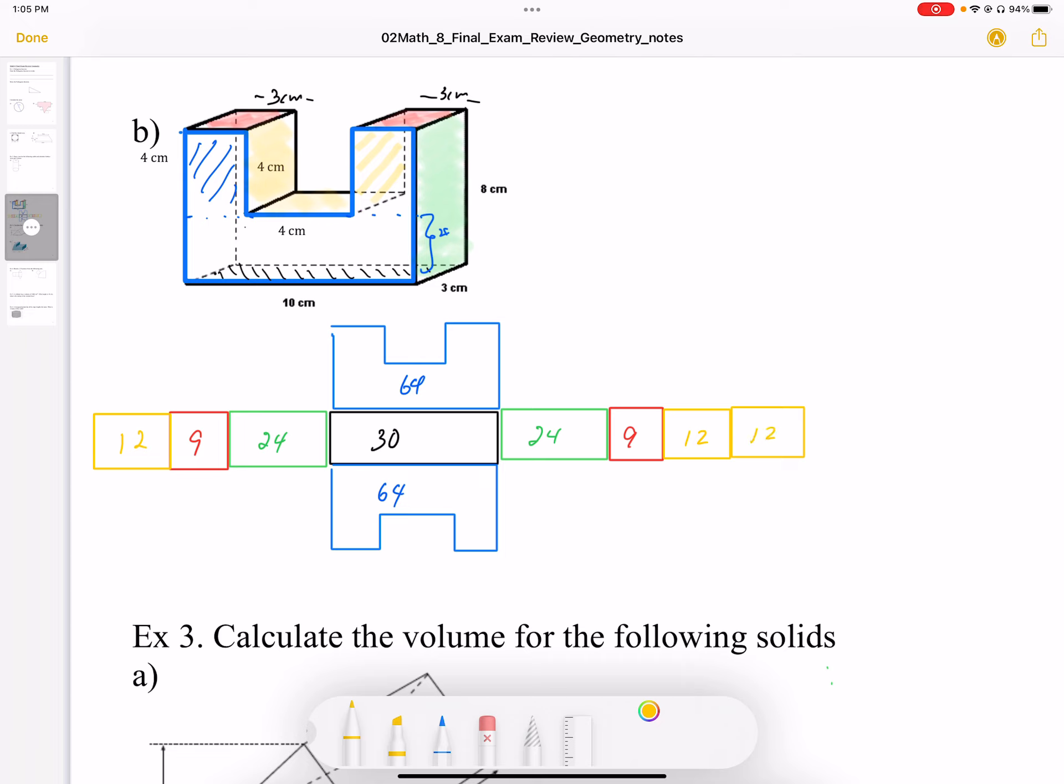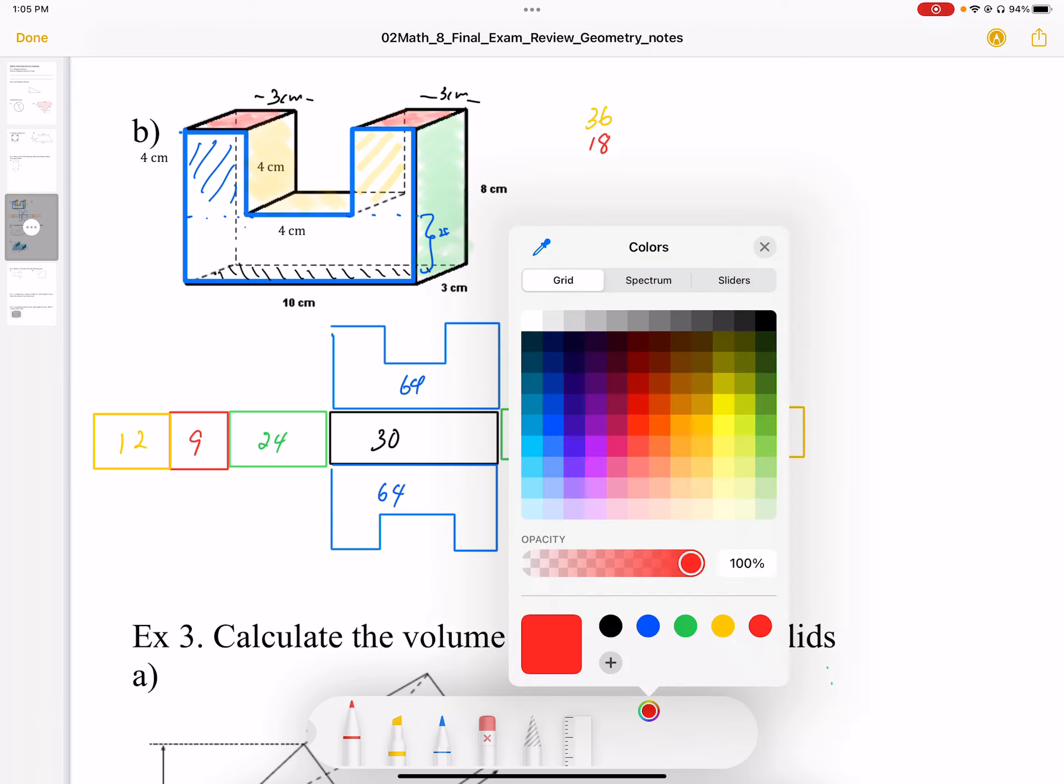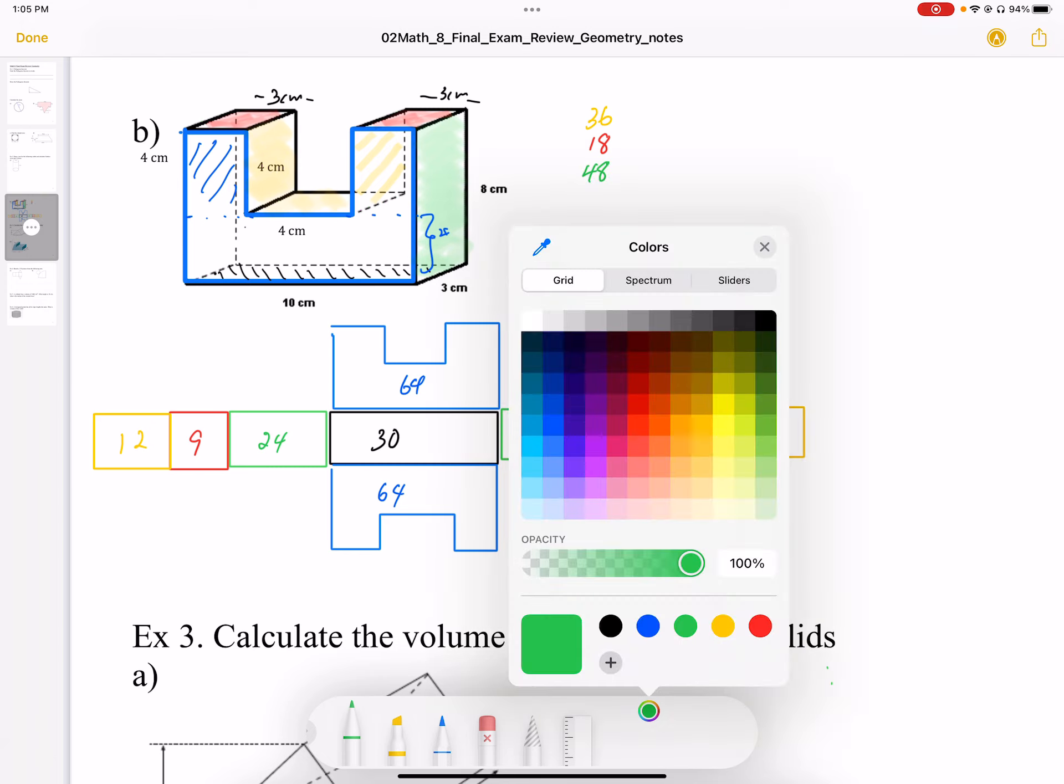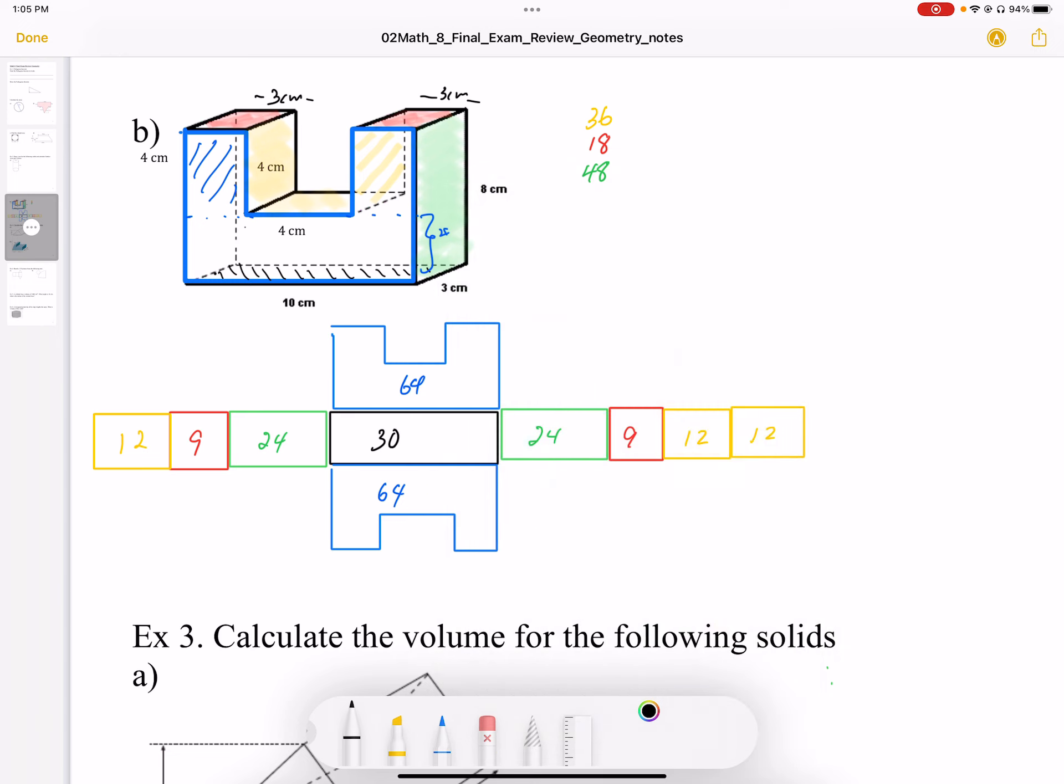So when we sum this all up, I'm going to start with my 12. So I have 3 times 12 or 36. For the red areas, if I add that all up, I'm going to end up with 18. For the green areas, if I add that all up, I get 48. For the black area, I get 30. For the blue areas, I get 128.